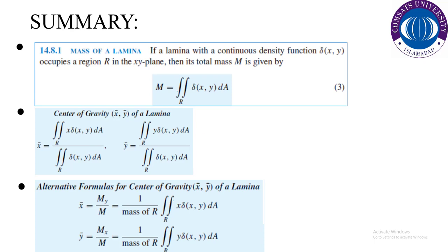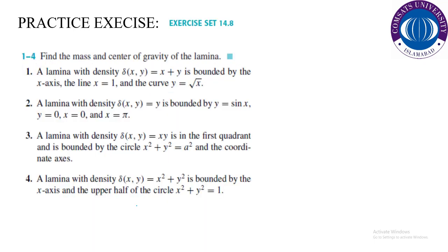Summary of the lecture: in this whole lecture we studied two things — one is the mass of the lamina, and the second is the center of gravity. The mass of the lamina is represented in terms of a double integral, and with the help of the double integral we calculated the coordinates of the center of gravity. The components of center of gravity are represented by x̄ and ȳ. There are basically two ways to find x̄ and ȳ: solve in division form, or independently calculate My, Mx, and M and then divide as given in the formula. The related exercise is 14.8.